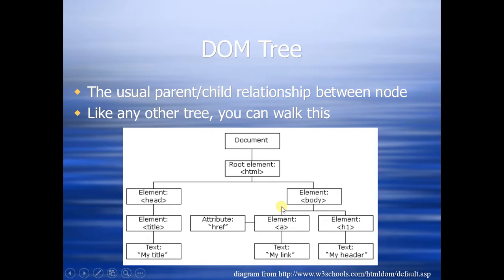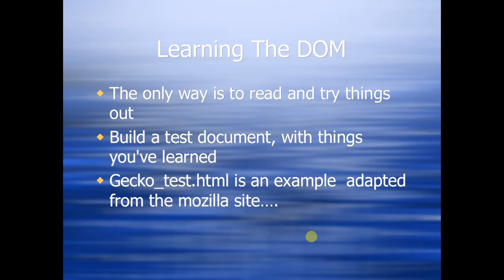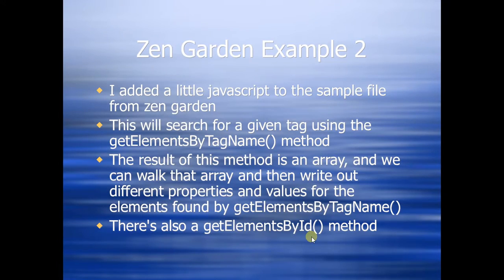When you create a page in HTML and display it in a browser, the DOM tree will be created — not in the form of a diagram, but as a structure. The DOM tree helps us identify the relationship between nodes. For example, the parent node of HTML is document, the parent node of head and body is HTML, and the child nodes of body are A, H1, and so on.